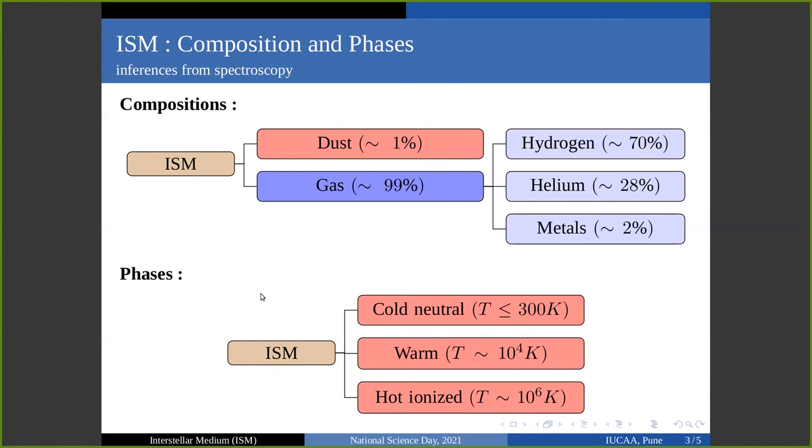Observationally, it has been found that ISM is multiphase. The ISM contains phases characterized by different temperatures, densities, and ionization fractions. These phases are the cold neutral phase with temperature less than 300 Kelvin, the warm phase with temperature of order 10^4 Kelvin, and the hot ionized phase with temperature of order 10^6 Kelvin.